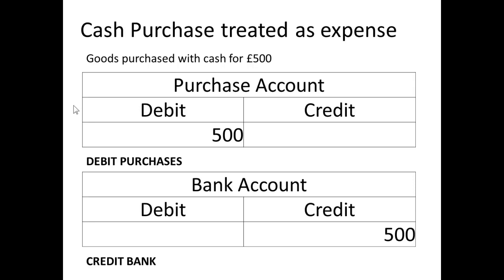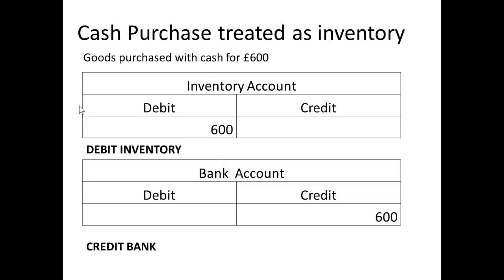If we have a cash purchase which is treated as an expense, there will be two entries: we will debit an account and we will credit an account. We debit the purchases account, because that's the expense, and we credit the bank account, because that's where the money's come from. So it's debit purchases, credit bank.